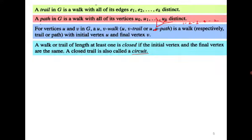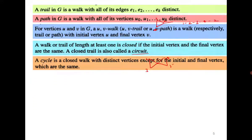It is different. A cycle is always a circuit, but a circuit is not always a cycle. For example, consider vertices 1, 2, 3, 4, 5. You can go from 1 to 2 to 3, coming back to 1, then 4, then 5 and coming back to 1. This is a circuit — edges do not get repeated — but it is not a cycle. A cycle is a closed walk with no repetition of vertices except the initial and final vertex.